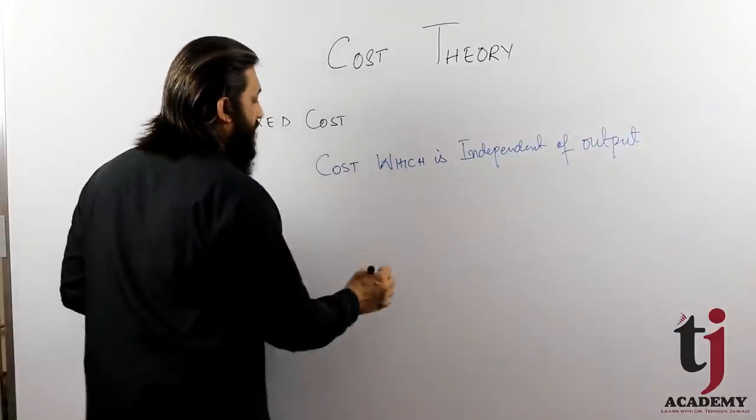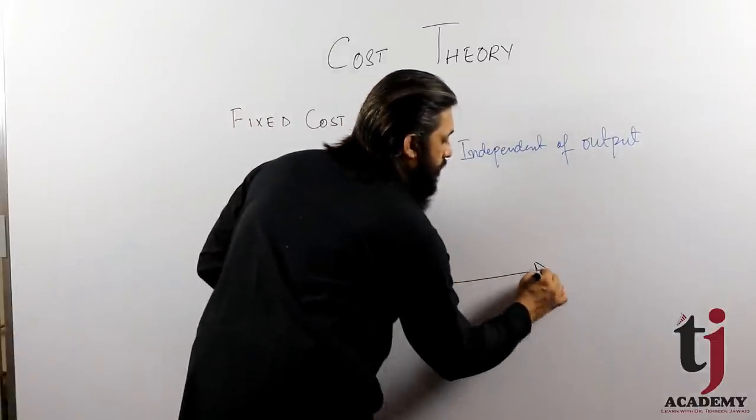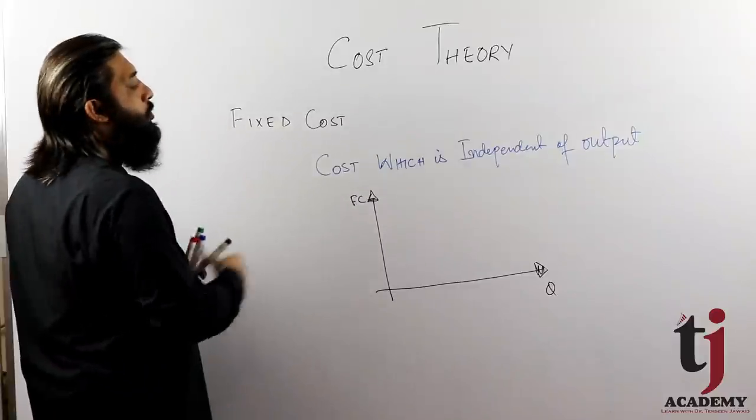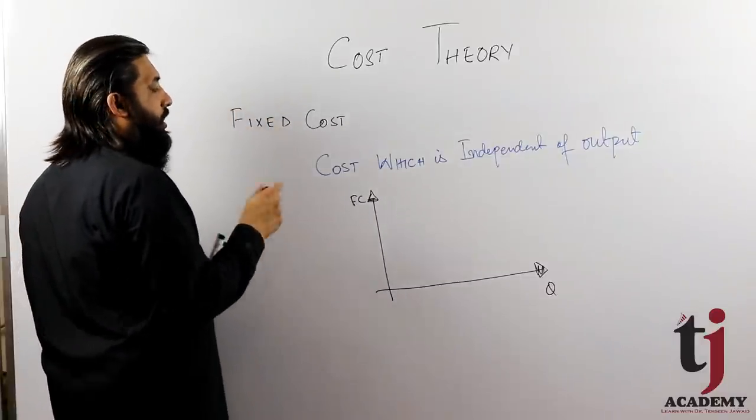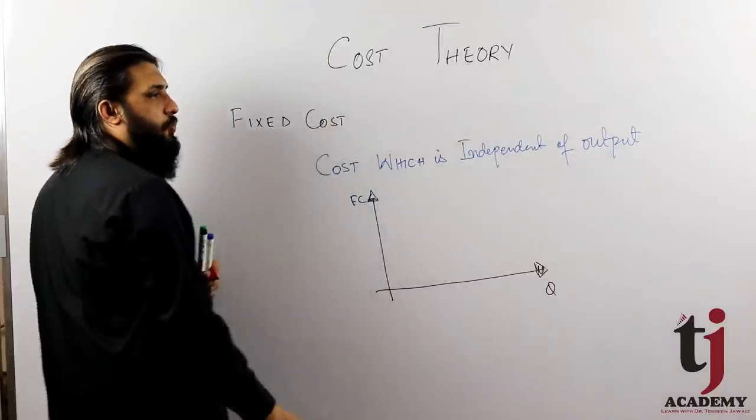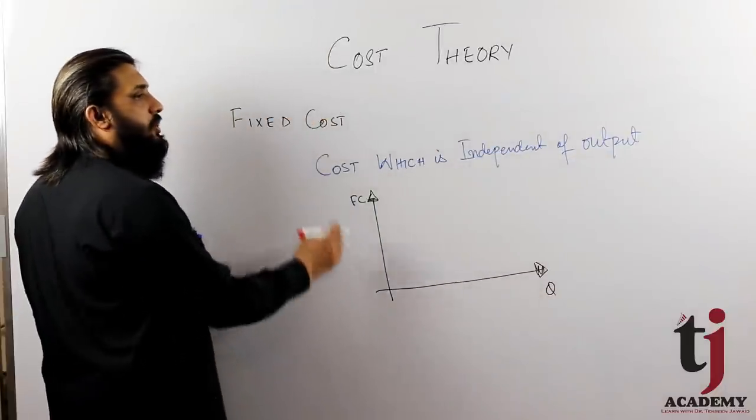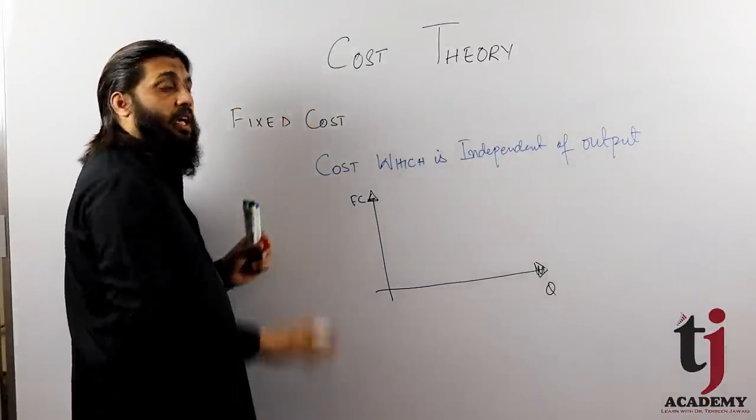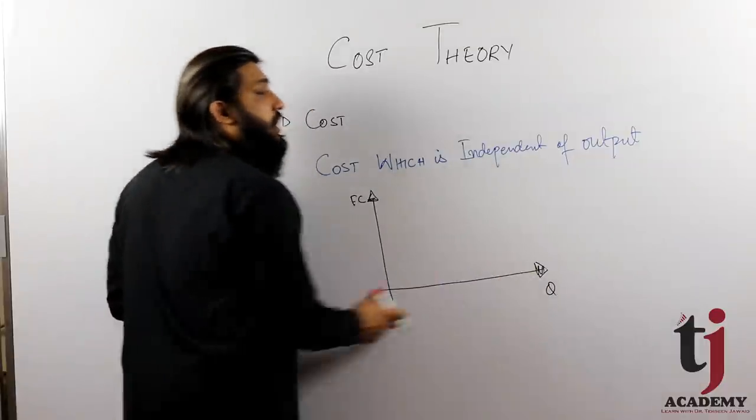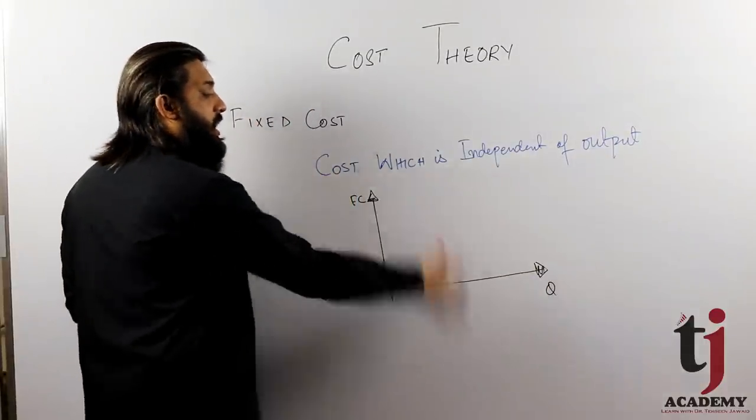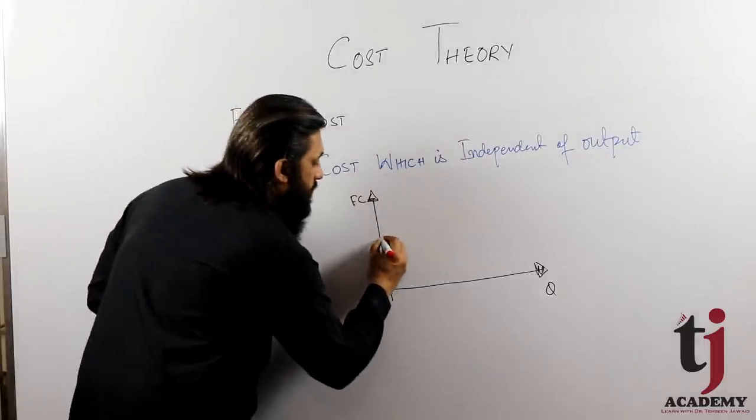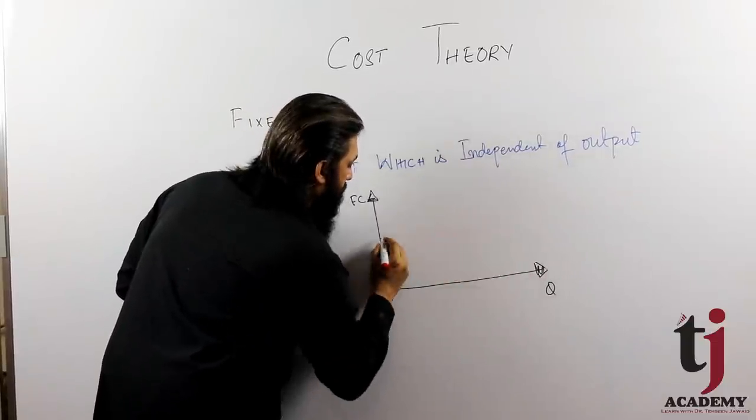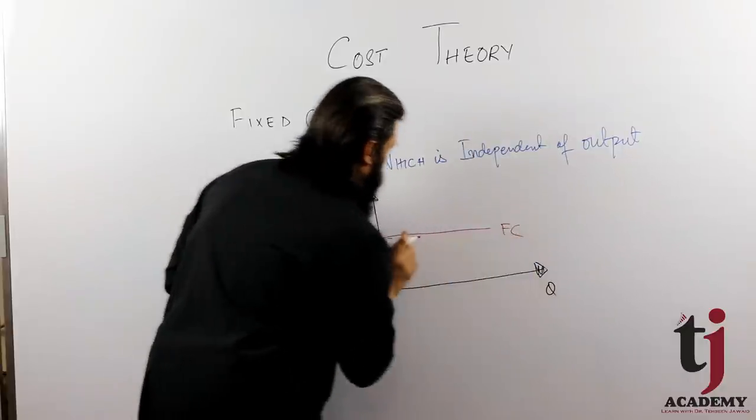If you look at the cost which is independent of output, output bigger or output less, it will not affect the cost. So in the two-dimensional graph, we have seen that if x increases or decreases, y has no difference. Y is independent of x. So it will be a graph like this, a straight line. This is fixed cost.